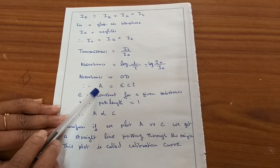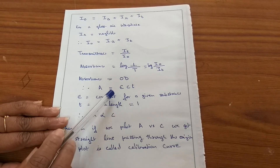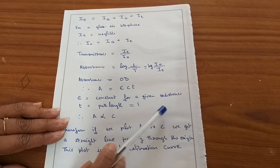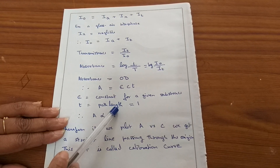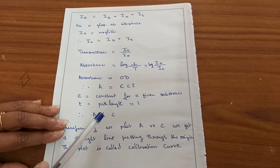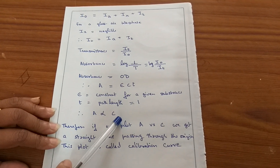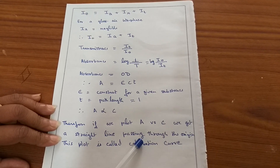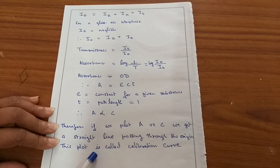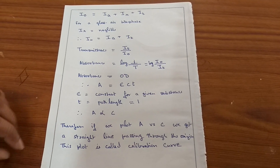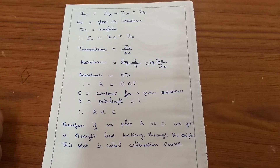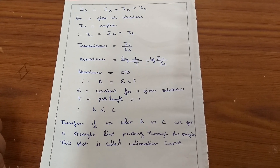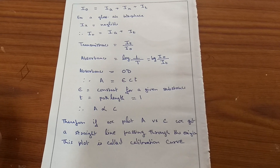We can also say that absorbance equals E·C·T, where E is epsilon, the molar absorptivity coefficient, which is a constant for a given substance. T is the path length and is unity. Therefore, absorbance is directly proportional to concentration. If we plot absorbance versus C, we get a straight line passing through the origin. This plot is called the calibration curve, and with it we can determine the concentration of any given substance.